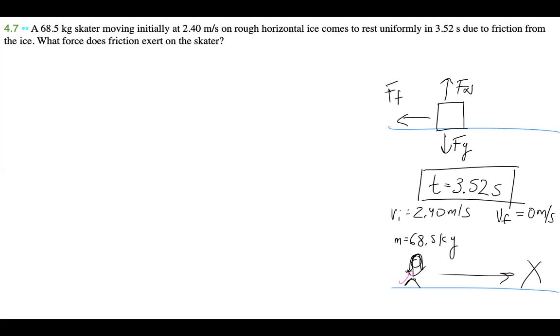Let's write down all of our givens and our wants. We want to know what the force of friction is. Mass is 68.5 kilograms. Initial speed is 2.40 meters per second. Final speed is 0 meters per second. Time is 3.52 seconds.